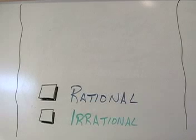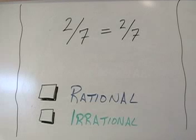Let's take a few examples and see if we can decide which group they belong in. Let's start with two over seven. Let's see if we can write this as a fraction. We can write two over seven. It already is a fraction. So this is a rational number. Any fraction is a rational number.